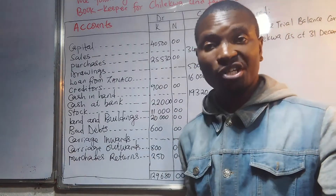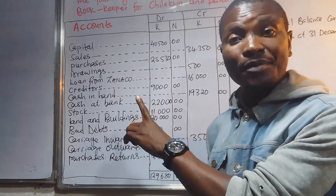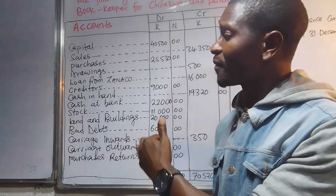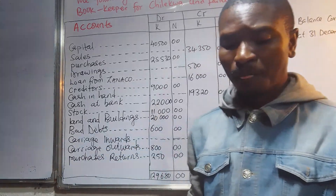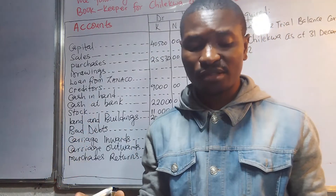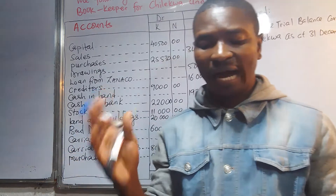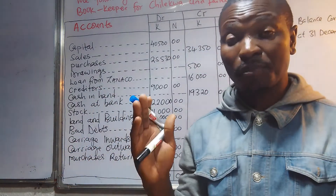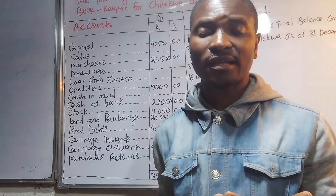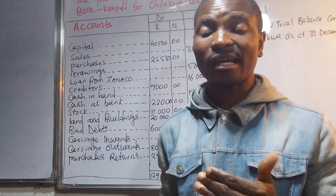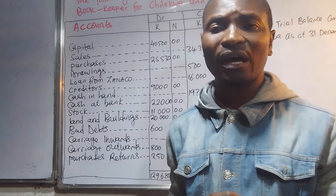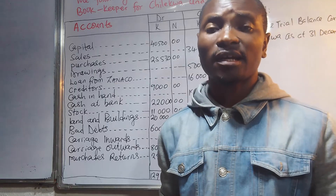The items we need to check include: capital, sales, purchases, drawings, loan from Zanaco, creditors, cash in hand, cash at bank, stock, land and buildings, bad debts, carriage inwards, carriage outwards, and returns inwards. We must understand the meaning of each item so that balancing the trial balance is not difficult.